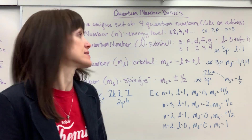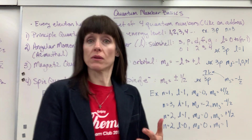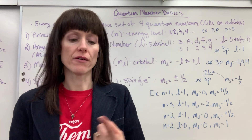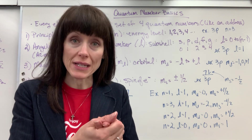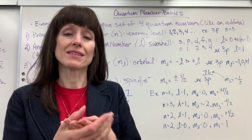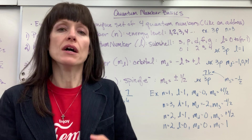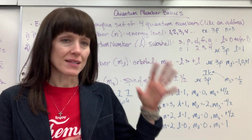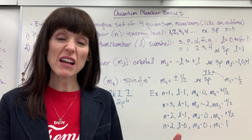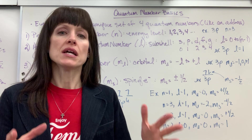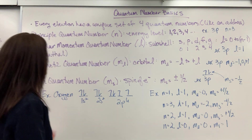It's really like an address — like where you live. You have your house number, the street that you live on, the city you live in, the state you live in. That's the same thing with quantum numbers. We're giving an address to every electron inside of an atom. Let's look at the four quantum numbers.